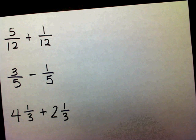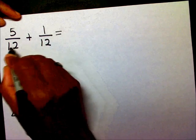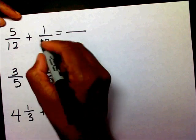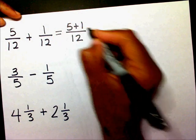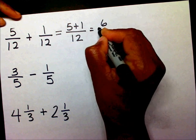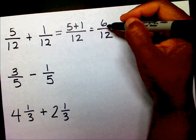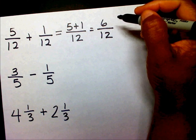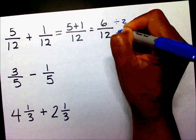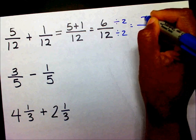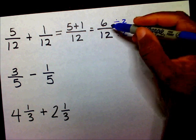We have for our first problem, 5/12 plus 1/12. Well, since our denominators are the same, I'm going to draw my line. I'm going to just bring my denominator of 12 over. And I'm going to add 5 plus 1 in my numerator. So I have 5 plus 1 is 6 over 12. Now, 6 and 12 share a greatest common factor of 2. So I'm going to divide the 6 and the 2, and the 12 and the 2, and that's going to give me 3/4.